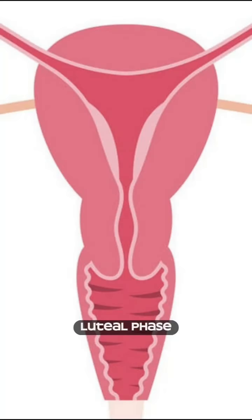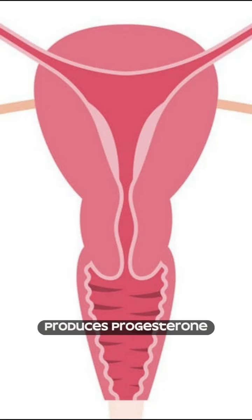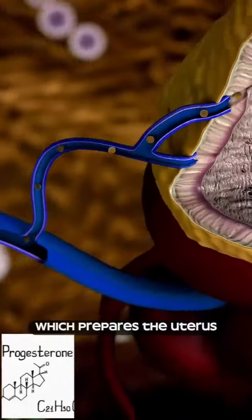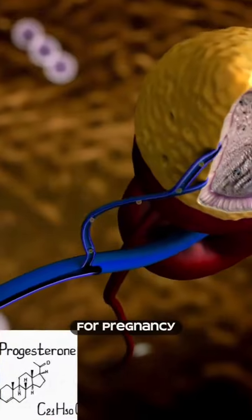Luteal phase — after ovulation, the body produces progesterone, which prepares the uterus for pregnancy.